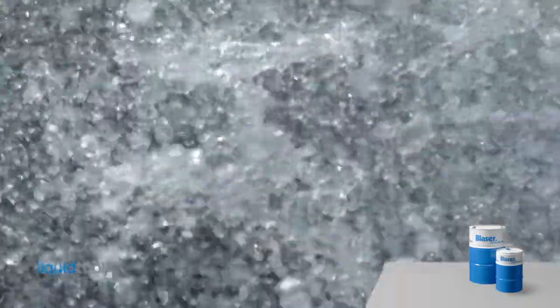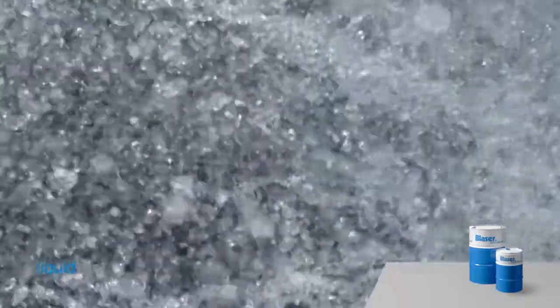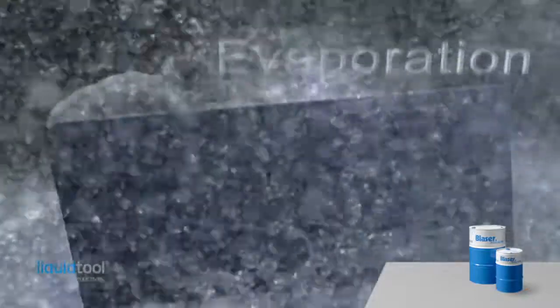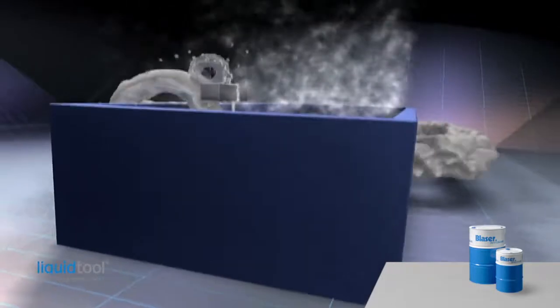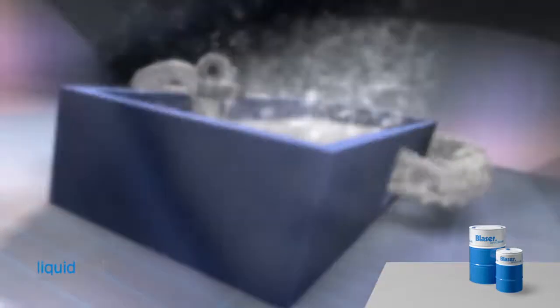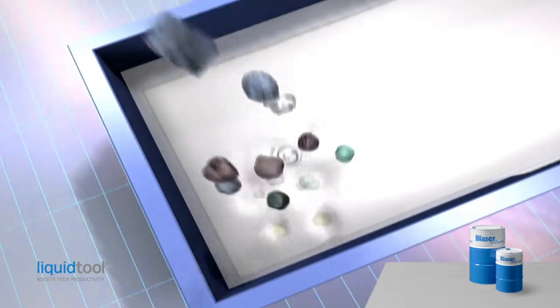Another water quality criterion is the chloride and sulphate content. Since water salts are left behind when water evaporates from the emulsion, the salt content in the emulsion steadily increases. Unfortunately there is no way of removing these salts from the system.